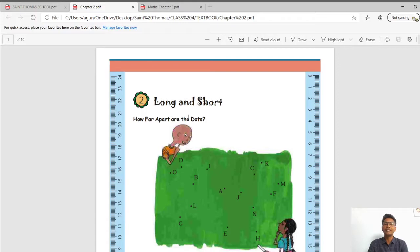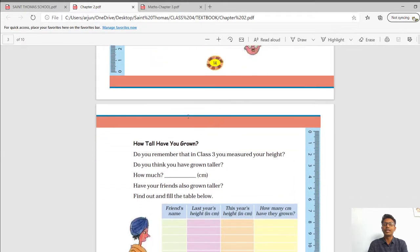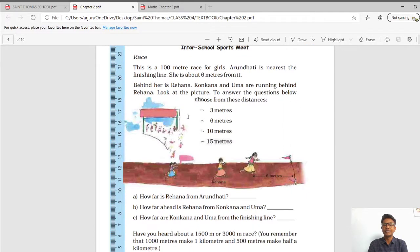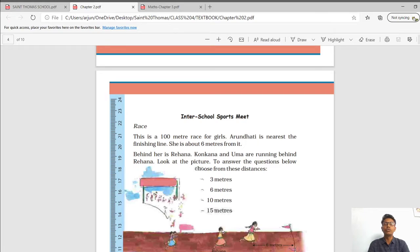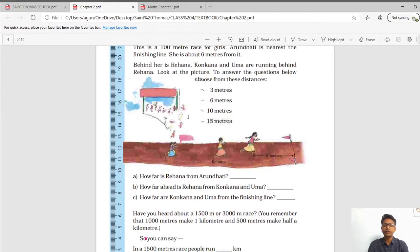Starting from here, we will skip this story because this story can't be asked in the exam. This can be asked in inter-school sport meet. This is a 100 meter race for the girls. Arundhati is nearest the finishing line. She is about 6 meters from it. Behind her is Rehana. Konkana and Uma are running behind Rehana. Look at the picture to answer the question below. Choose from these distances.